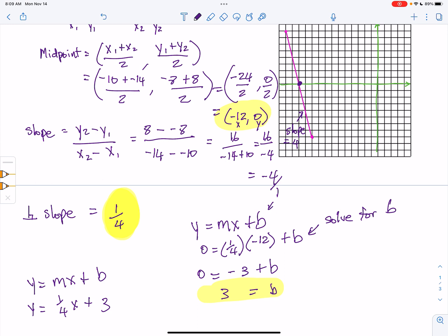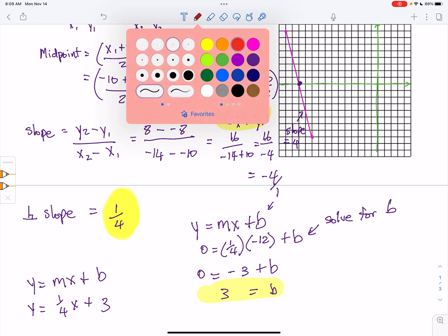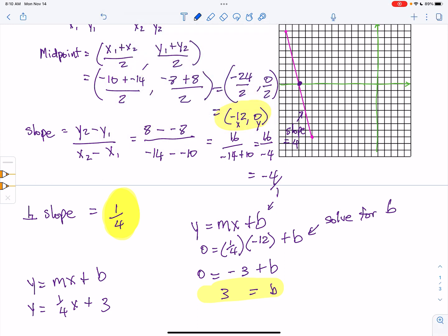And always good to check what that looks like. So let's use a different color. And so our y-intercept is 3, and our slope is 1 fourth. So we go down 1 and over 4, down 1 and over 4, down 1 and over 4.